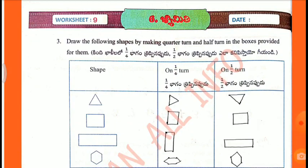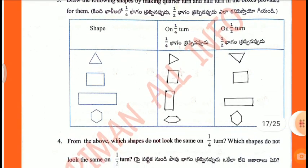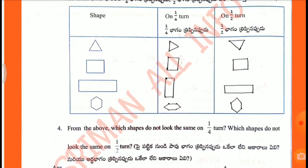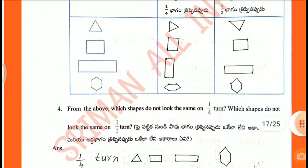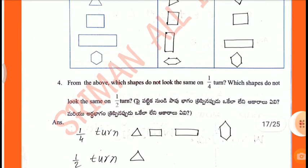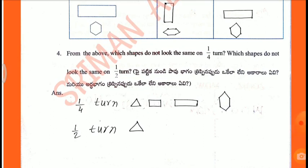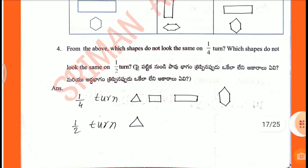Third question: draw the following shapes by making a quarter turn and a half turn in the boxes provided. Draw the numbers by 1/4 turn and 1/2 turn. From the above, which shapes don't look the same on a 1/4 turn, and which shapes don't look the same on a 1/2 turn? The figures change and some don't look the same.